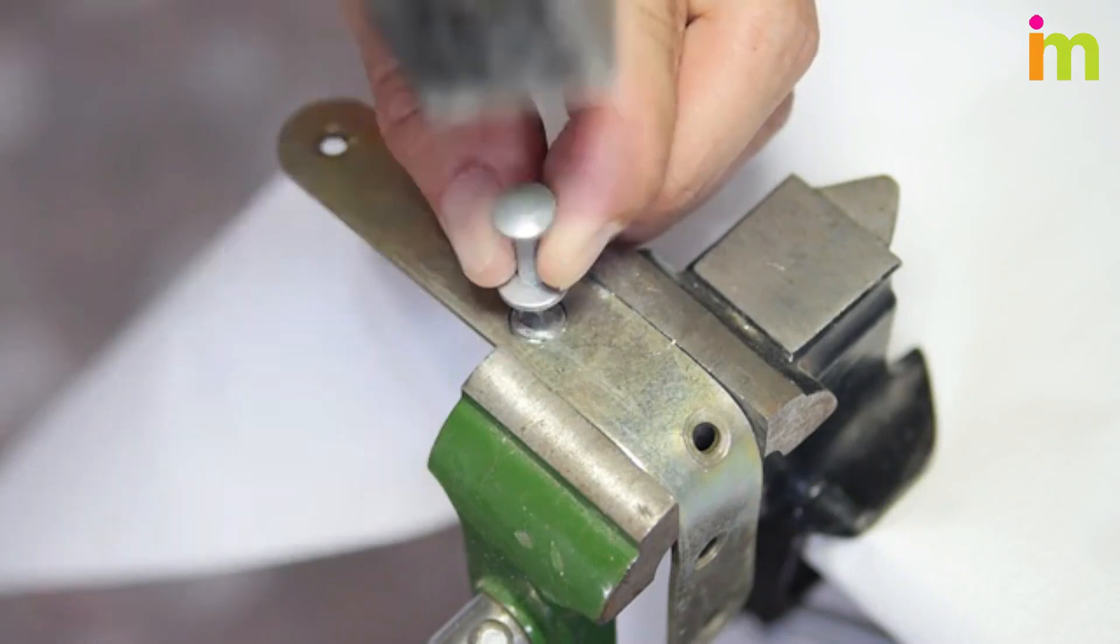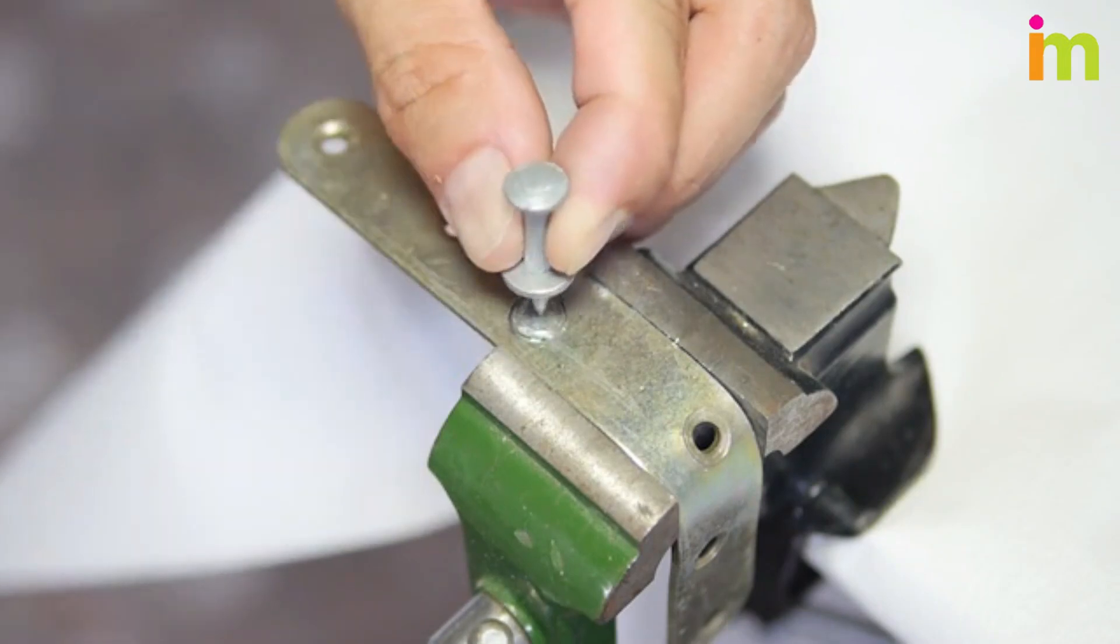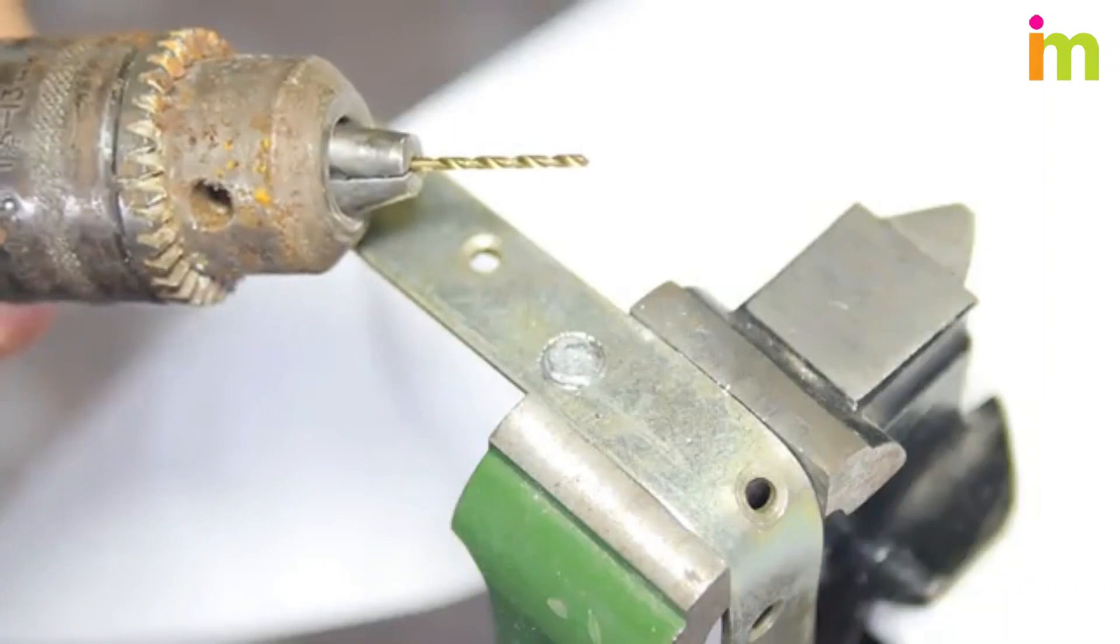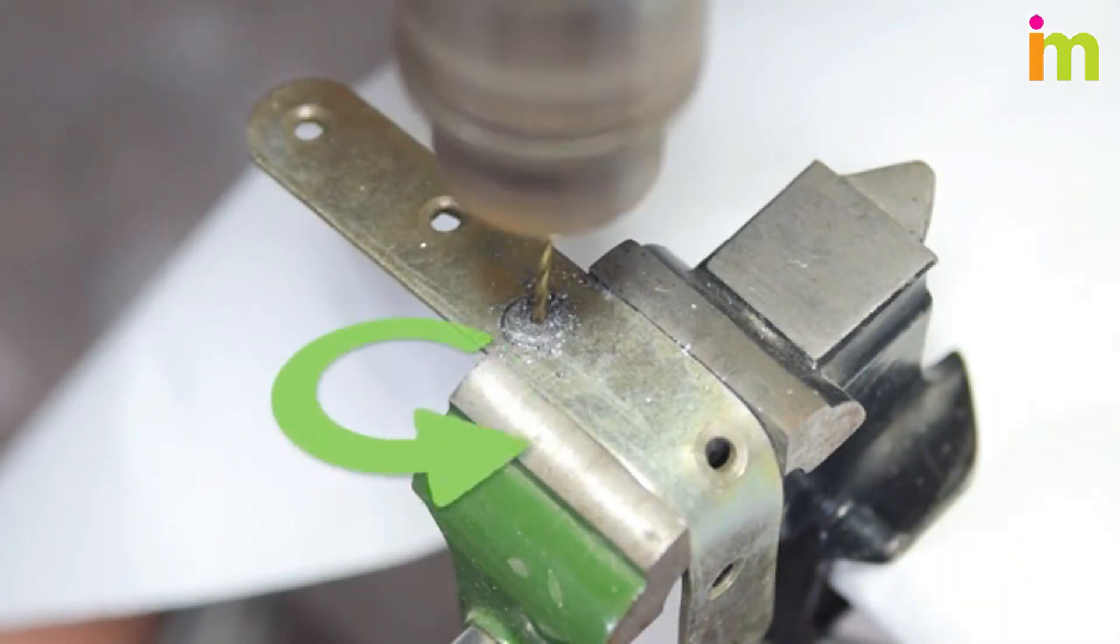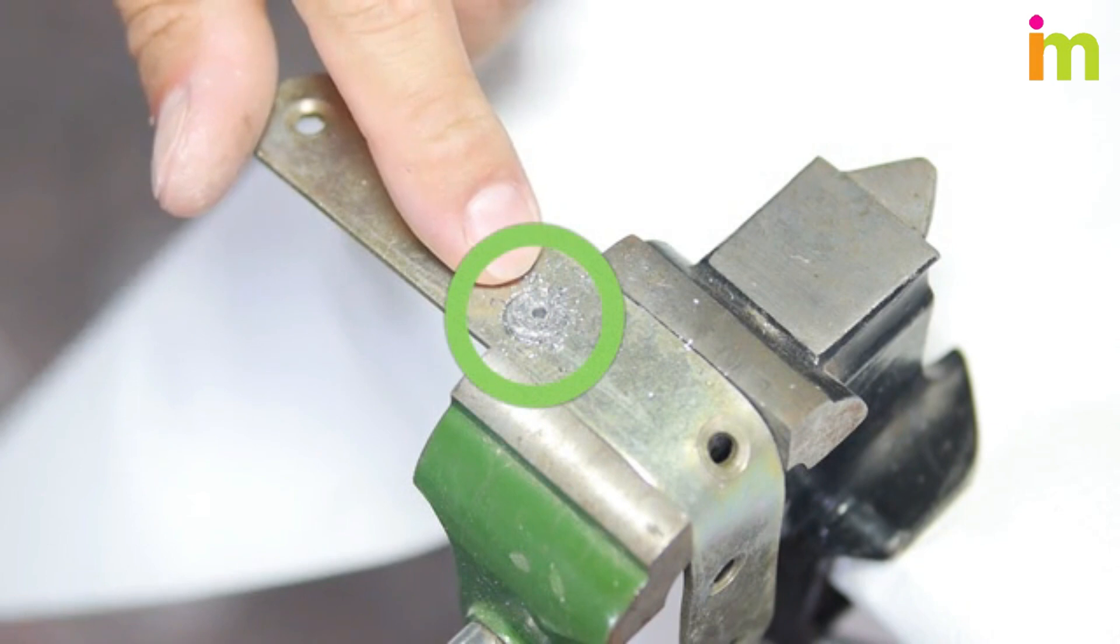This will help you drill into the center of the bolt as closely as possible. Drill a pilot hole into the center of the broken bolt with a left-handed drill bit. A left-handed drill bit is threaded in the opposite direction, so the reverse setting on your drill is what will actually drive in the bit.